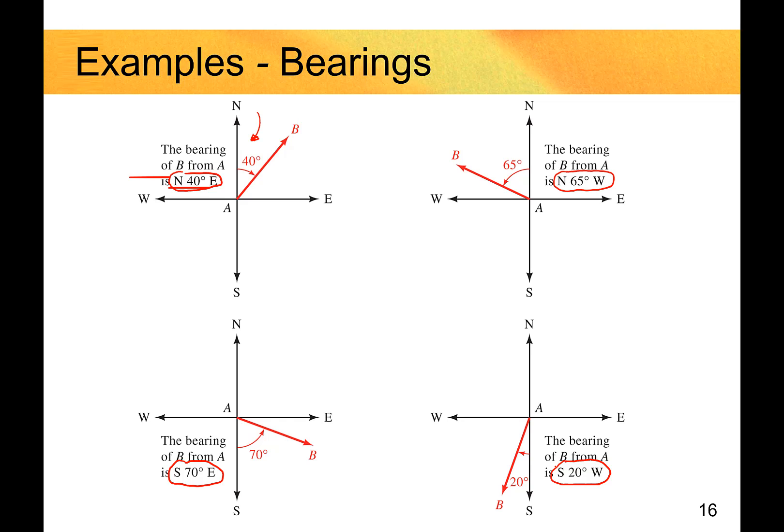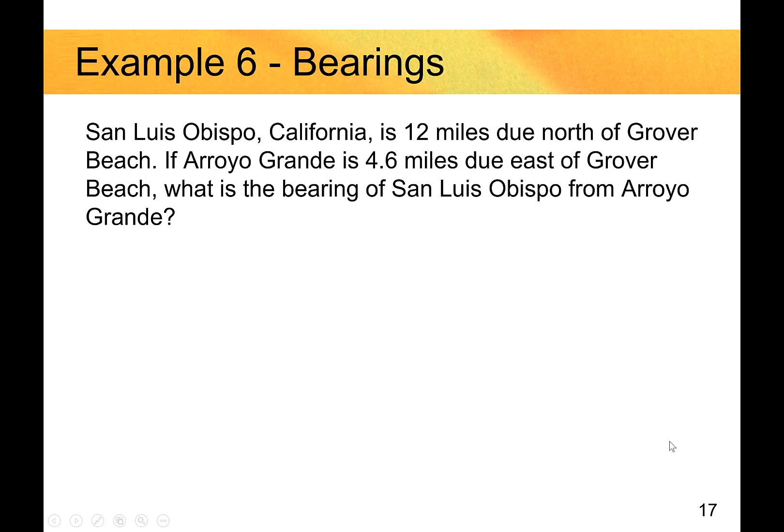So let's take a look at our example, a little closer to home. We have San Luis Obispo, California. It's 12 miles due north of Grover Beach according to the map. And Arroyo Grande is 4.6 miles due east of Grover Beach. So what is the bearing of San Luis Obispo from Arroyo Grande? That's the key element here.